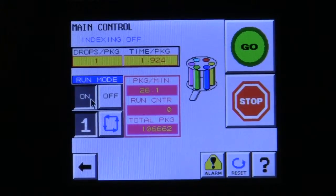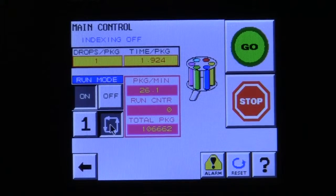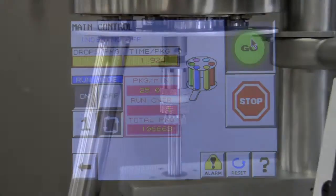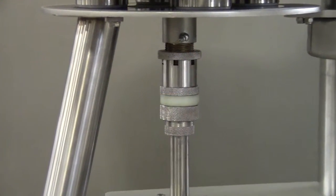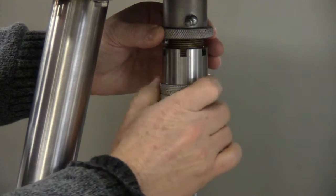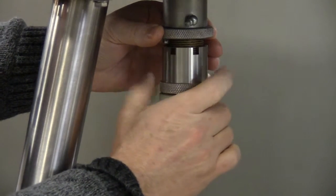The graphical menus allow the operator to quickly and easily set up the machine. Cup volume fine adjustment helps to ensure fill accuracy for a range of products.